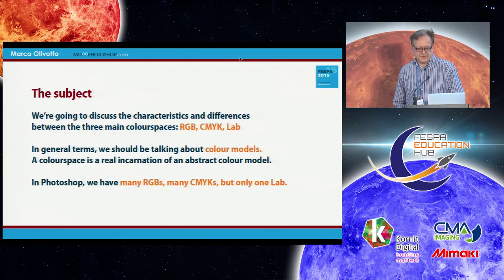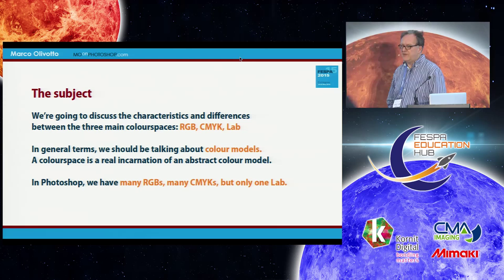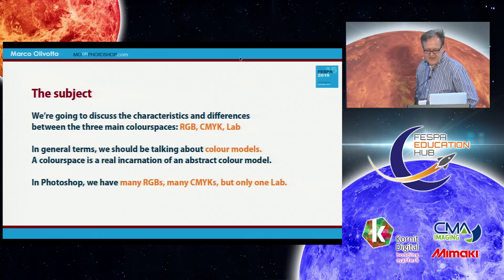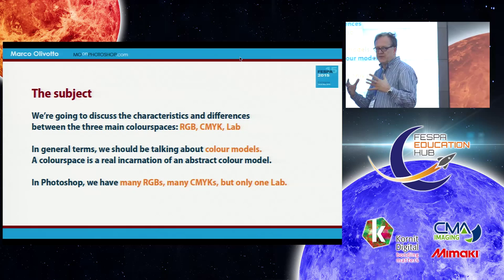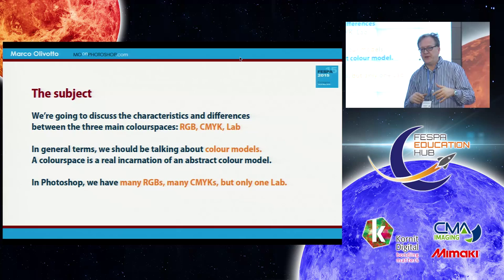The subject of this lesson is to discuss the different characteristics and differences between the three main color spaces: RGB, CMYK, and LAB. They are not the only color spaces — we also have XYZ, widely used in theory. I should note we're talking about color models, because when I say RGB, I'm naming something that follows certain rules. There is not one single RGB — there are many: sRGB, Adobe RGB, Profoto RGB, Wide Gamut RGB.